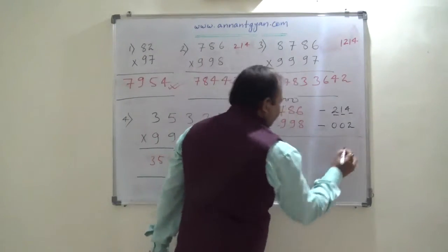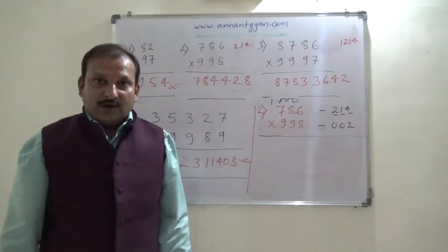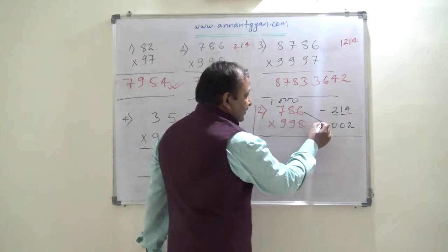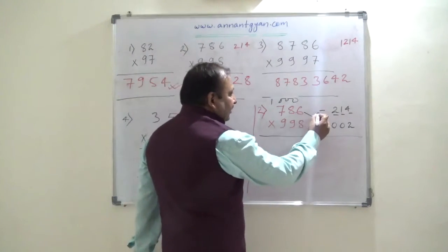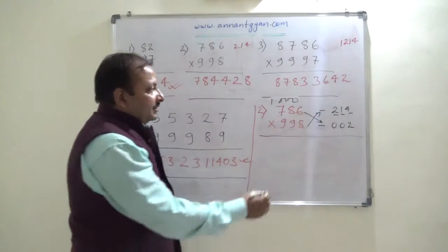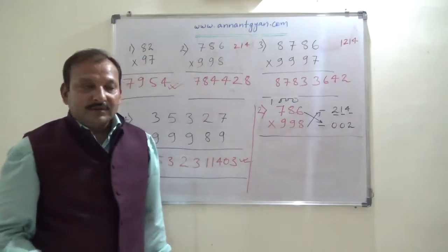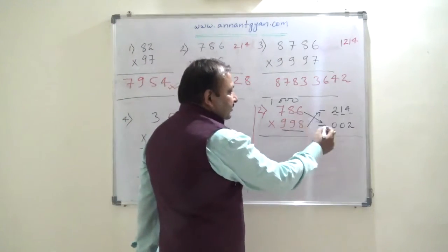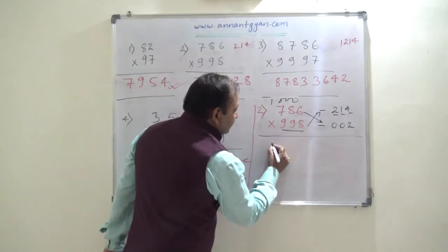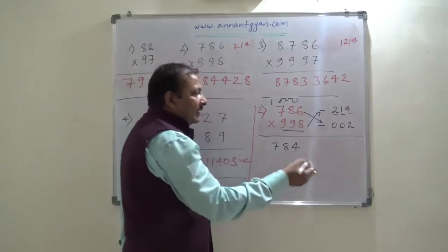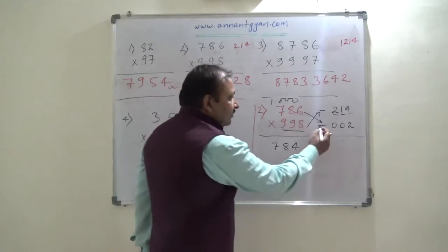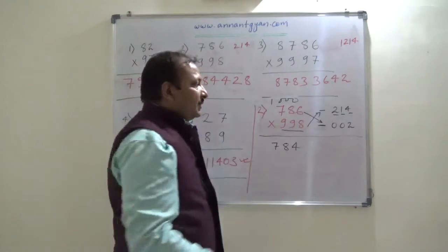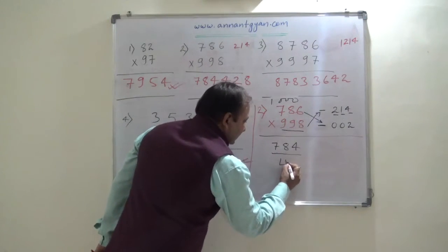We shall get the answer using these deviation values. We subtract the second number's deviation value from the first number: 786 plus minus 002 becomes 784. I shall write 784 in the LHS of our result. Note that if one number is more than 1000 it becomes plus, and if less than 1000 it becomes minus — I will explain mixed cases in the next video.